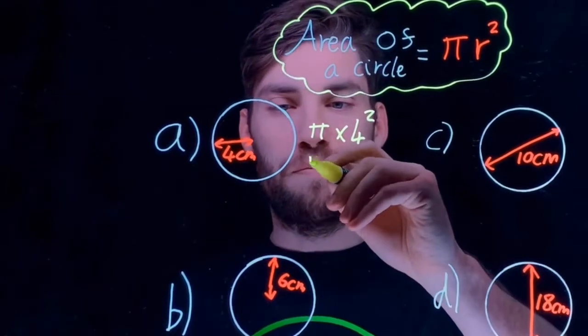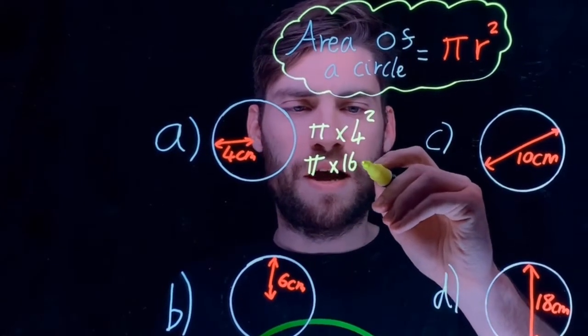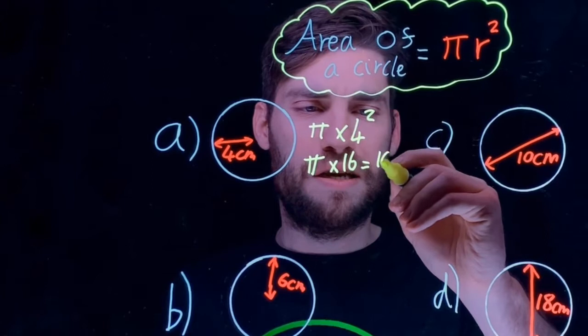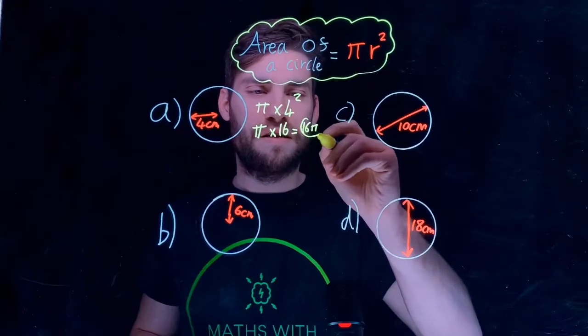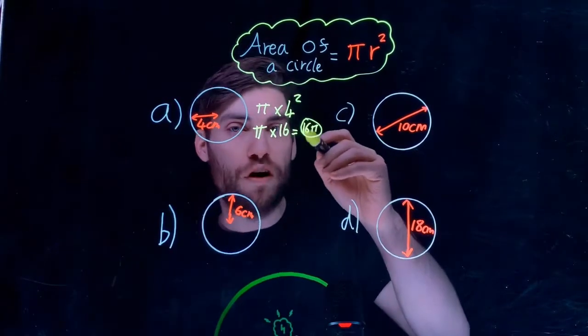It's 4 times 4. So it'll be π times 16. Then our answer is 16π. And that is it. That is the area of this circle given in terms of π.